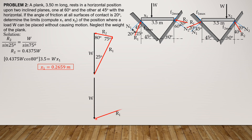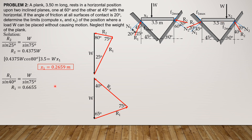Drawing the force triangle: weight is vertical, R1 makes 65 degrees with vertical, R2 makes 40 degrees. The included angle is 180 minus (65 plus 40) equals 75 degrees. By sine law: R1 over sine 40 equals W over sine 75, giving R1 equals 0.6655W. Summing moments about point 2 — only the vertical component of R1 contributes — gives 0.6655W times cos65 times 3.5 equals W times x₂, so x₂ equals 0.9844 meters.